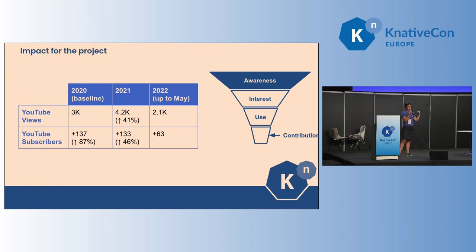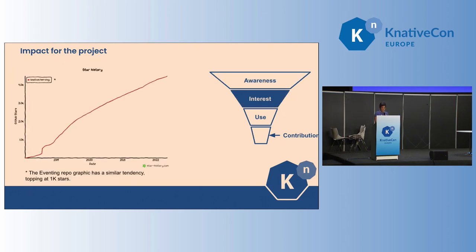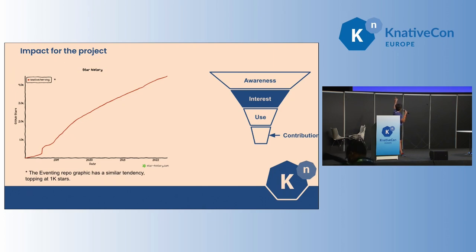People are not only watching the content but also subscribing to the channel to learn more. And if we correlate this to some other GitHub stats, one metric that I capture is stars because it's the most stable one that can speak to this kind of work. We see that the interest people are showing in the project is also continuously going up. What you see here is the graphic for the serving repo, and the eventing repo is a very similar graphic but it caps at 1,000 stars. So the Meetup has totally been helping the project grow by showing people how they can use the Knative technology in both its components.